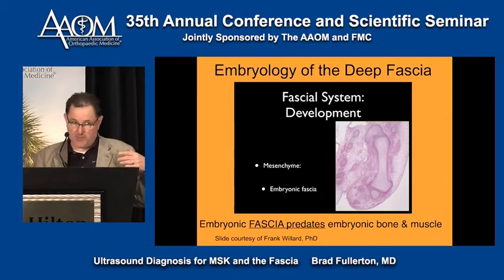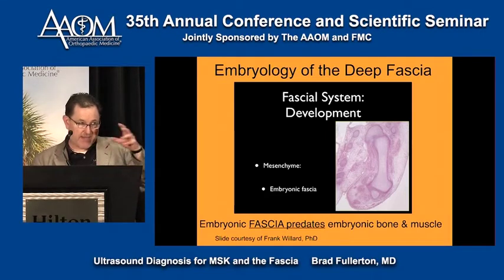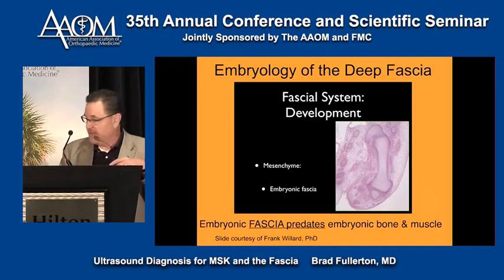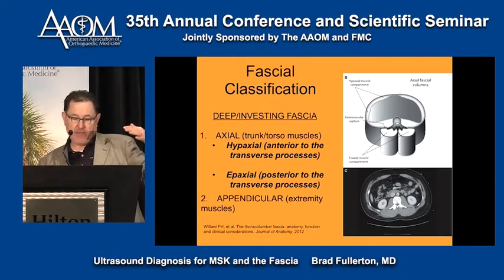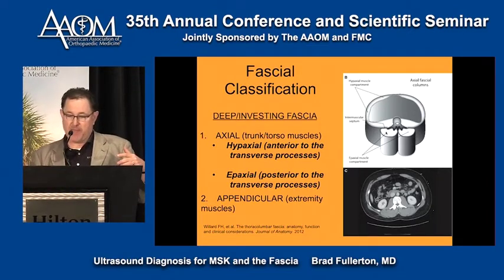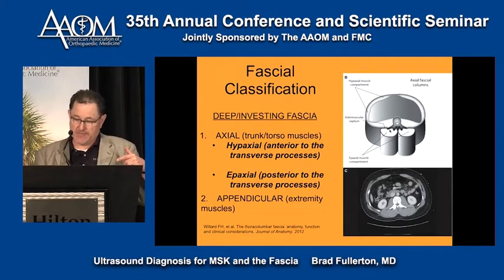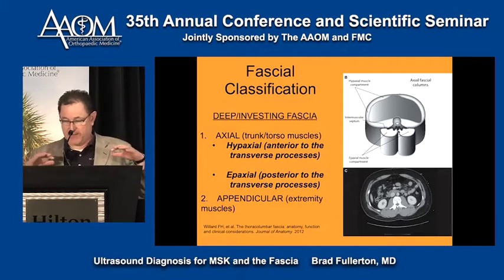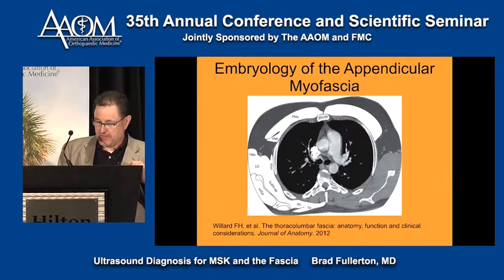The embryonic fascia predates embryonic bone and muscle and other mesenchymal tissues, so the fascia is the context for all these other tissues. The more we understand this interconnectivity of fascia, the more we'll understand movement. If we think about the deep investing fascia, you can make three separations: the hypaxial fascia — trunk fascia anterior to the transverse process — the epaxial fascia, posterior to the transverse process, and the appendicular fascia that starts as limb buds and migrates to the midline.